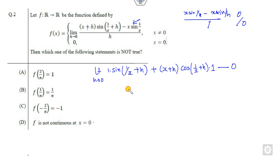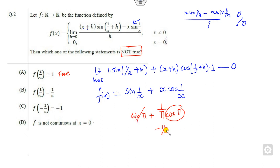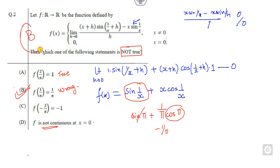Taking h = 0, the result is sin(1/x) + x·cos(1/x), which is f(x). Now checking at x = 2/π: sin(1/x) = sin(π/2) = 1 and cos(π/2) = 0, so the answer is 1 — that is a correct statement. But we need a not-true statement. At x = 1/π: sin(π) = 0 and (1/π)·cos(π) = -1/π, giving answer -1/π — this is the wrong statement. Checking continuity also confirms all others are correct, so the right answer is B.